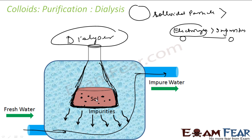The dialyzer bag contains the colloidal solution and is suspended in a vessel through which fresh water continuously flows. The impurity molecules and ions diffuse through the membrane, but the colloidal particles do not diffuse, so you obtain a pure colloidal solution.